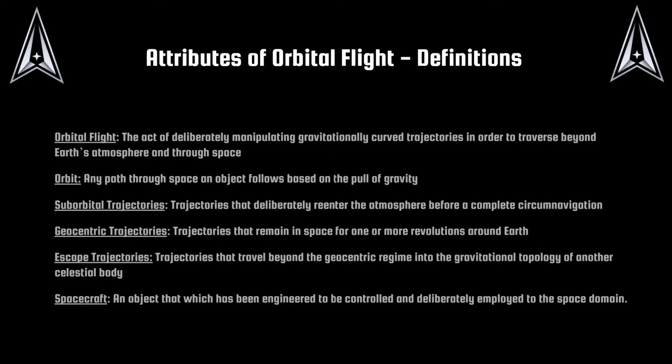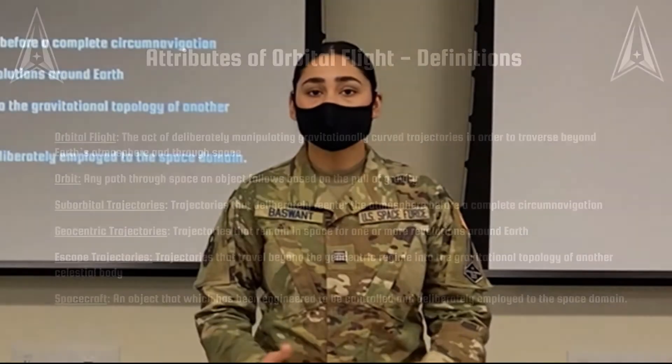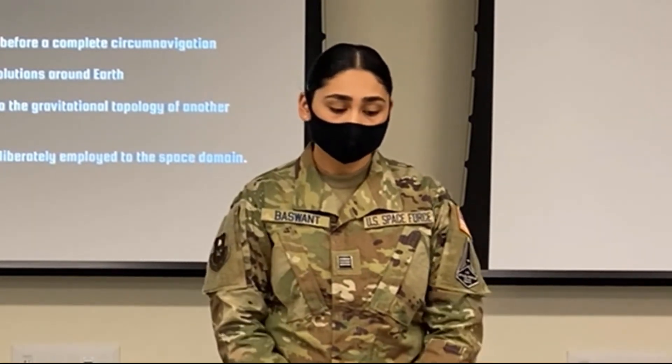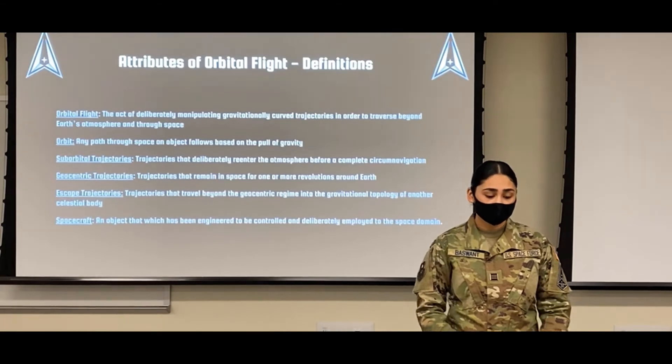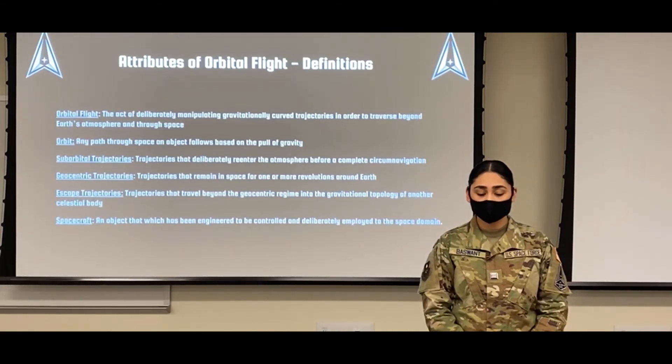Geocentric trajectories are trajectories that remain in space for one or more revolutions around Earth — this would apply to missiles that need to hit a point farther away to complete their mission. Escape trajectories travel beyond the geocentric regime into the gravitational topology of another celestial body, largely applying to gravitational slingshots. For example, a spacecraft flying toward the moon can use the moon's gravity to change direction without expending onboard propellant. A spacecraft is an object engineered to be controlled and deliberately employed in the space domain.